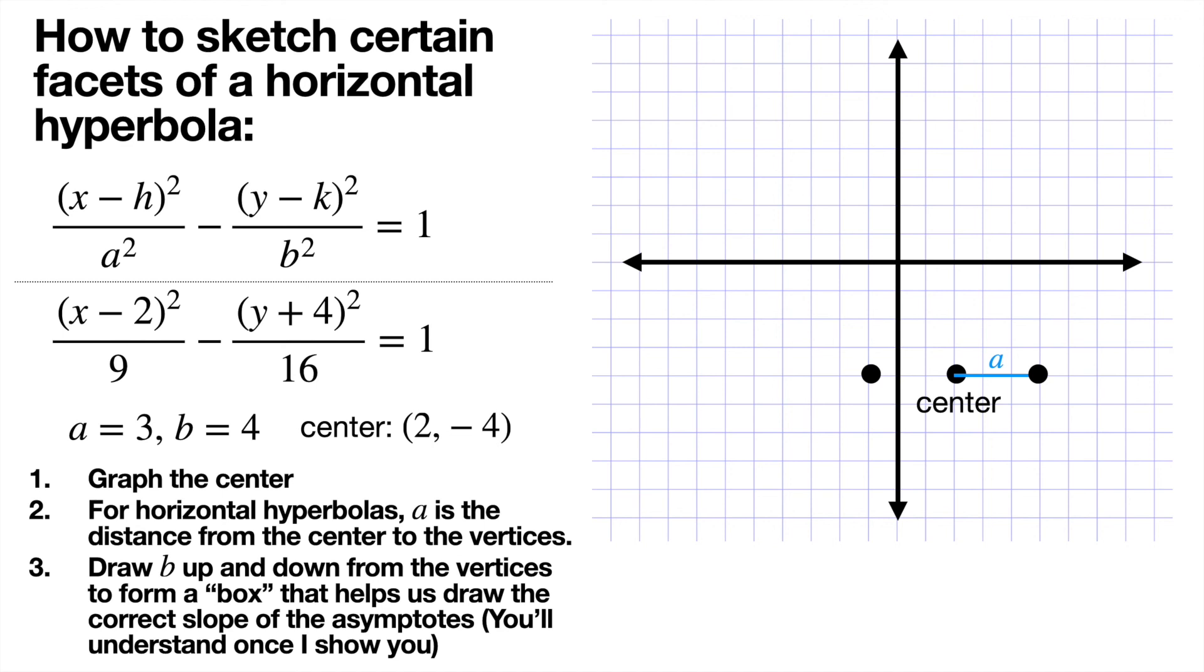And from each of the vertices, now we're going to go up by b and down by b. Now once you have that, you have what I call a box, and the box tells you how to draw the hyperbolas correctly because the slope b over a is implied by the box. So you just draw diagonal lines through the corners of the box.